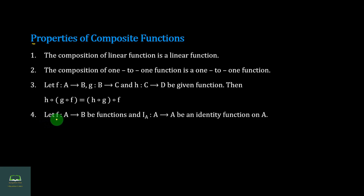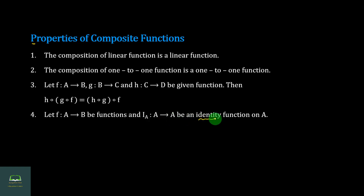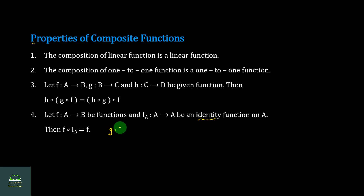Number 4: Let F be a function from A to B, and let I of A be the identity function from A to A. The function is from A to B, and the identity function is on A. The identity function composed with F, and F composed with the identity function, give important results in the composition process.